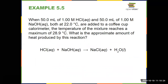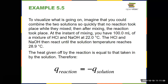I recommend you try Example 5.5 on your own. We're given 50 milliliters of 1 molar HCl and 50 milliliters of 1 molar sodium hydroxide, both at an initial temperature of 22 degrees Celsius. They're put in a calorimeter and the temperature reaches a maximum of 28.9 degrees Celsius. We want to find the approximate amount of heat produced by this reaction. I'm asked about Q_reaction, but I'm given information for the solution, so Q_reaction equals negative Q_solution.